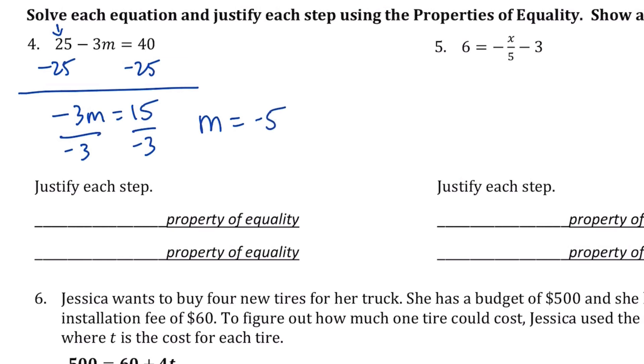And so let's justify each step. Well, the first thing I did was subtract 25, so it's going to be the subtraction property of equality. And since the second thing I did was divide by -3, it's going to be the division property of equality.